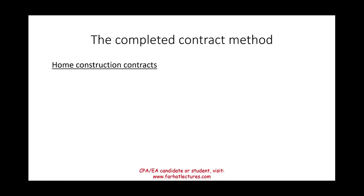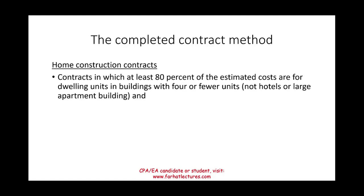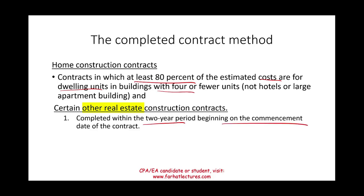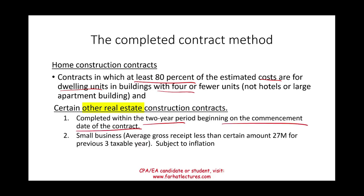The completed contract method exception applies to home construction contracts where at least 80% of the costs are for dwelling units in buildings with four or fewer units — not hotels or large apartment complexes. It also applies to certain other real estate construction projects, as long as they are completed within a two-year period from the commencement date and the taxpayer is a small business, meaning average gross receipts of less than $27 million for the previous three taxable years.